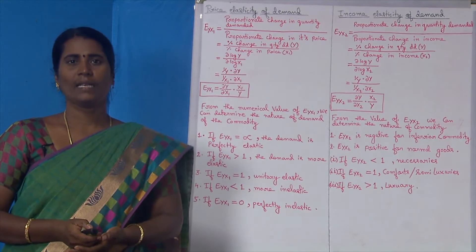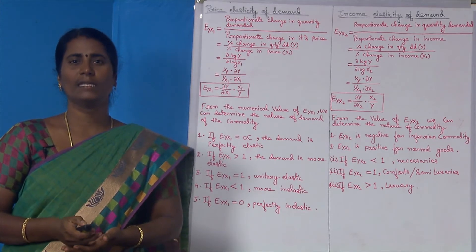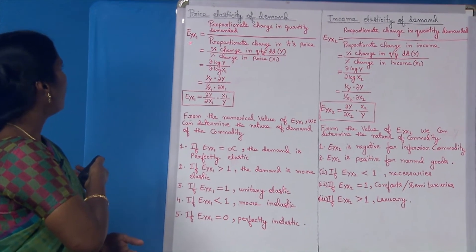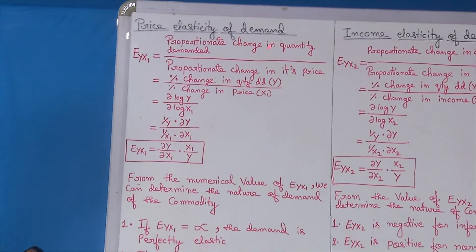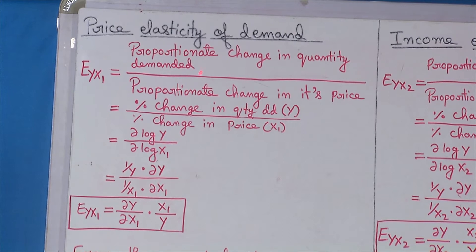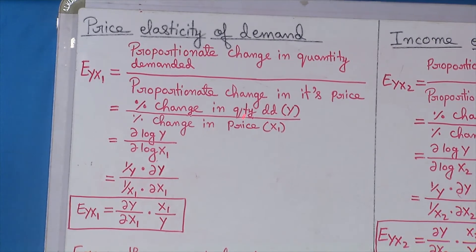By definition, the price elasticity of demand is the ratio of proportionate change in quantity demanded to the proportionate change in its own price. The price elasticity of demand is represented as E_YX1, which is equal to proportionate change in quantity demanded divided by proportionate change in its price. The proportionate change is the percentage change, so we have percentage change in quantity demanded divided by percentage change in price. The percentage change can be measured by taking the partial derivative of log y with respect to log x1, assuming x2 as constant.